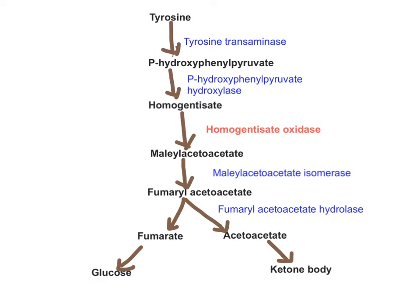Some key enzymes in this pathway: tyrosine transaminase enzyme deficiency gives rise to type 2 tyrosinemia. p-Hydroxyphenylpyruvate hydroxylase enzyme deficiency gives rise to type 3 tyrosinemia. Fumarylacetoacetate hydrolase enzyme deficiency gives rise to type 1 tyrosinemia, where there is accumulation of fumarylacetoacetate.